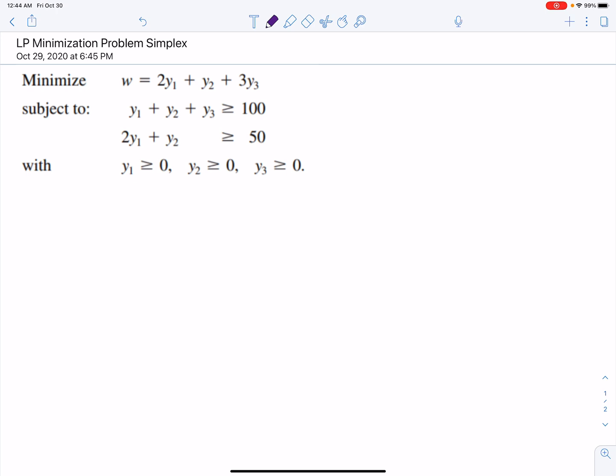So first of all, this is what a standard minimization problem looks like. First of all, there has to be a function that you're minimizing, and that is this objective function right here. Along with that, the coefficients of all the variables in the objective function have to be non-negative. So there we have that.